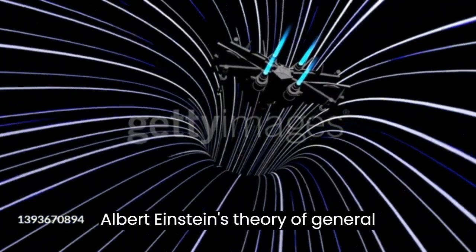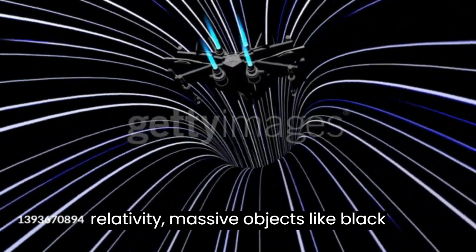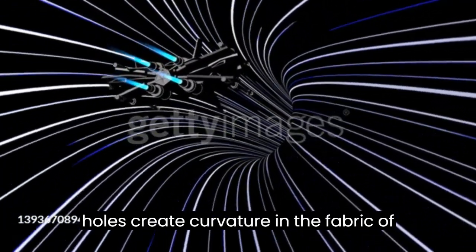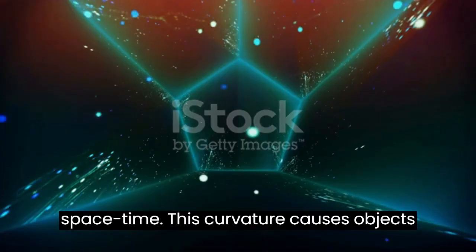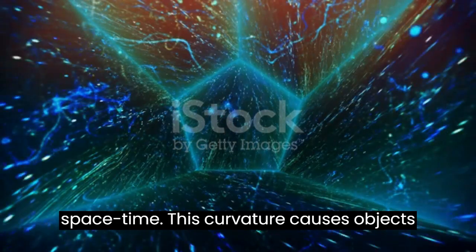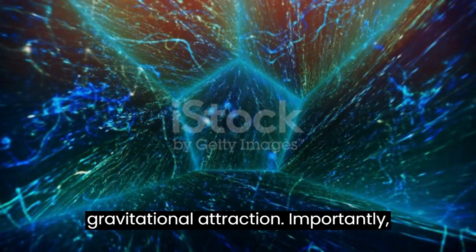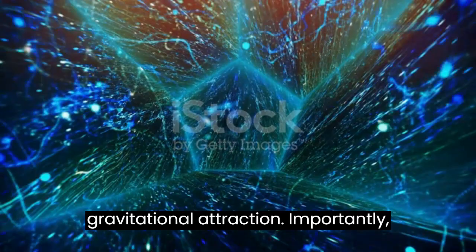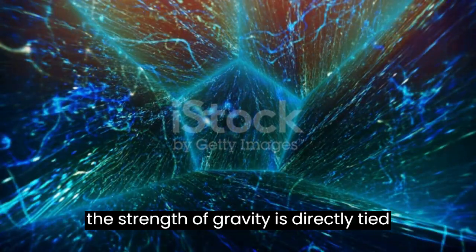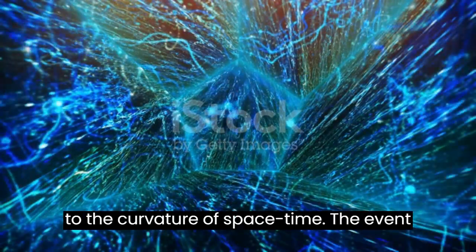According to Albert Einstein's theory of general relativity, massive objects like black holes create curvature in the fabric of spacetime. This curvature causes objects to follow paths that we perceive as gravitational attraction. Importantly, the strength of gravity is directly tied to the curvature of spacetime.